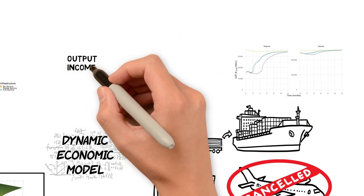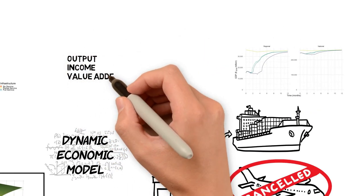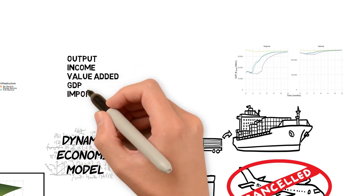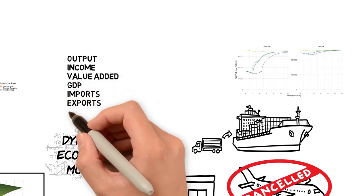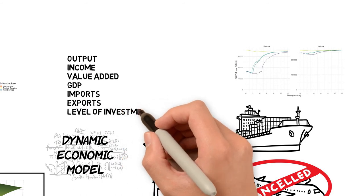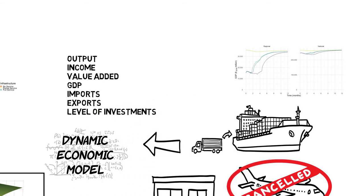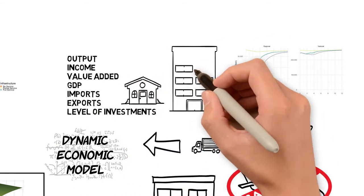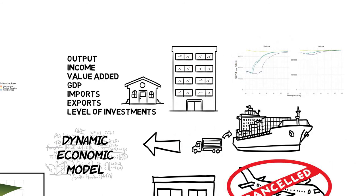MERIT can generate many different economic measures such as output, income, value added and GDP. It can also report on changes such as imports and exports and levels of investment. The economic measures can be reported over time at industry or household level for both the regional and national economy.